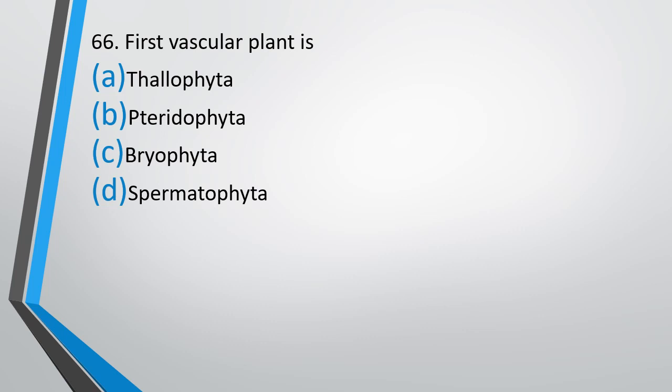Question number 66. The first vascular plant is? Option A: Thallophyte. Option B: Pteridophyte. Option C: Bryophyte. Option D: Spermatophyte. The correct answer is Option B — Pteridophytes are considered the first vascular plants.